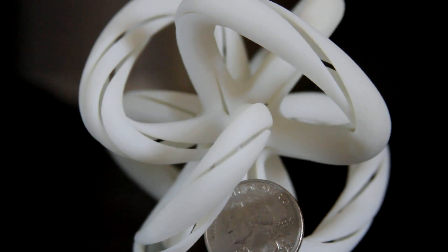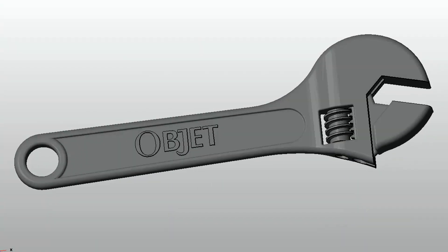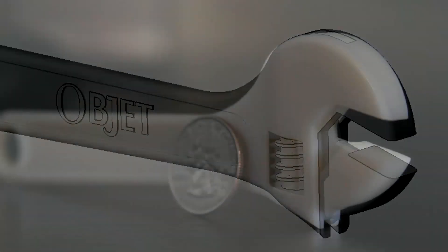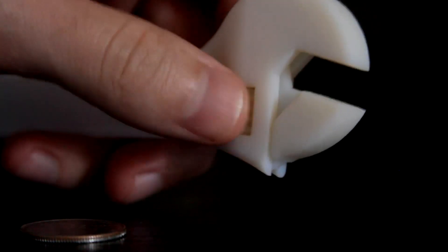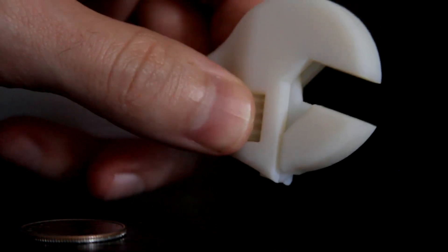Next up, simple enough, we have an allen wrench. The impressive portion here is the fact that it's printed all as one piece and it's fully functioning straight off the machine, just like the brain gear, no assembly required.